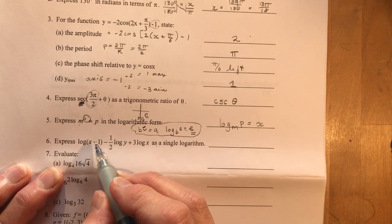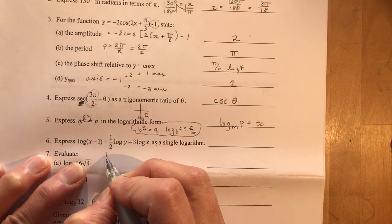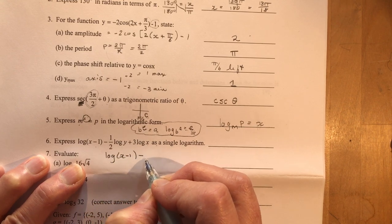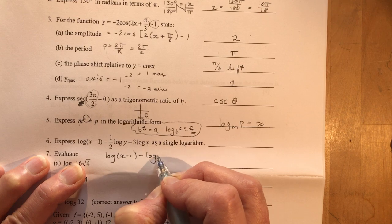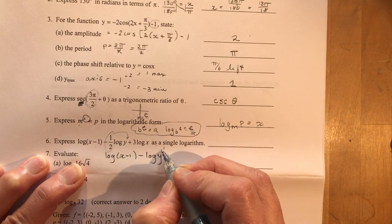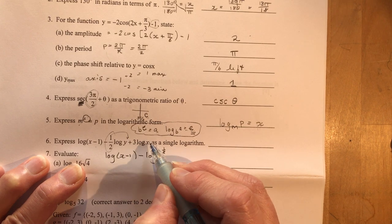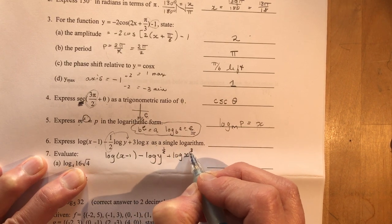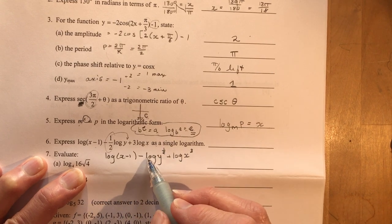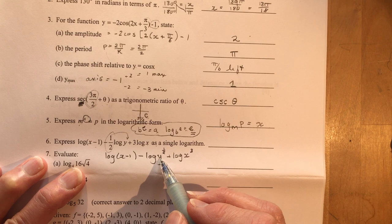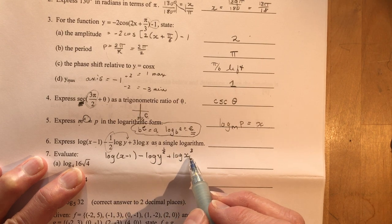Express log x minus 1 minus a half log y plus 3 log x as a single log. Okay. So each of these can be. Well not the first one. The first one can't do much with that. That's log of x minus 1. Now I'm going to move the exponents first. So this becomes the exponent of y. So it's y to the one half. And the 3 becomes log of x cubed. Okay. So I'm dividing. So if you're dividing this goes in the denominator. If you're adding you're multiplying.